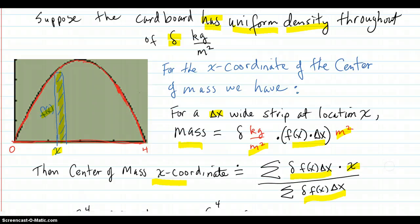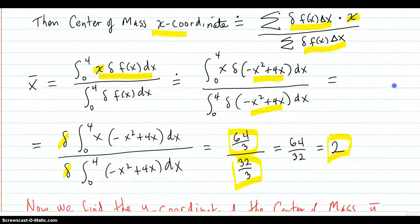If you're going to balance this cutout, you're certainly going to put your finger on this x equals 2 line right here, somewhere here. You're not going to put it over here and you're not going to put it over there. You're going to put it somewhere on this line. So the x-coordinate is taken care of, somewhere here. Now we've got to find the y-coordinate.